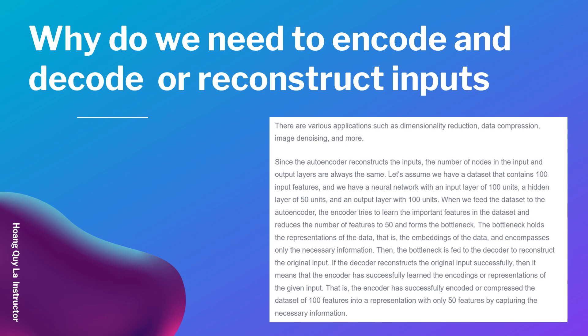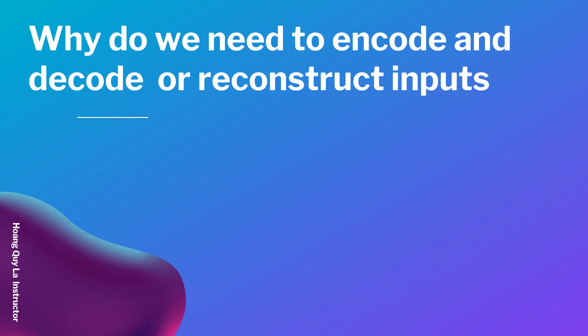The bottleneck is then fed to the decoder to reconstruct the original input. If the decoder reconstructs the original input successfully, it means that the encoder has successfully learned the encodings of all the representations of the given input — that is, the encoder has successfully encoded or compressed the dataset of 100 features into a compact representation with only 50 features by capturing the necessary information.